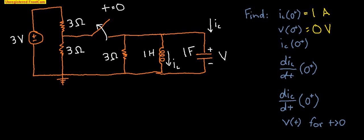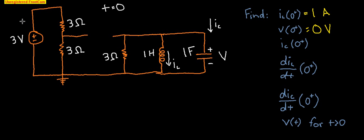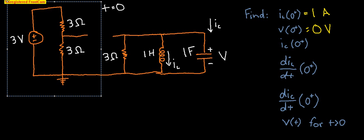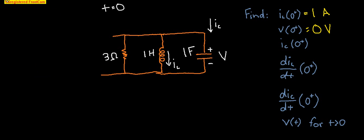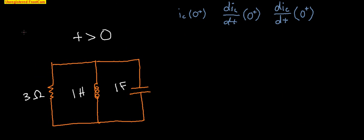Now, to get our other initial conditions, we need to look at time greater than zero. At time greater than zero, this switch will open, meaning no electricity from the battery is going to make it to this side of the circuit. So that side of the circuit is basically gone. This is our circuit at time greater than zero.